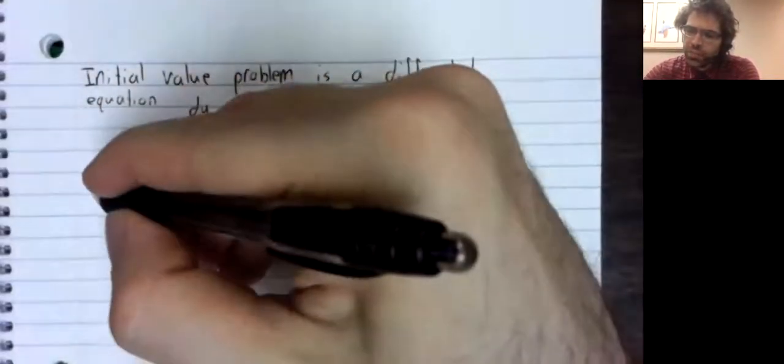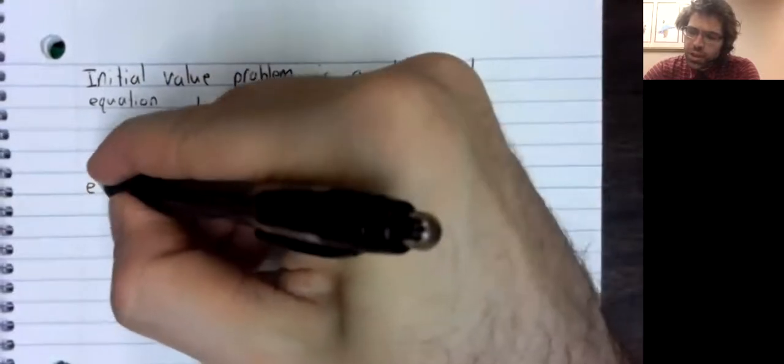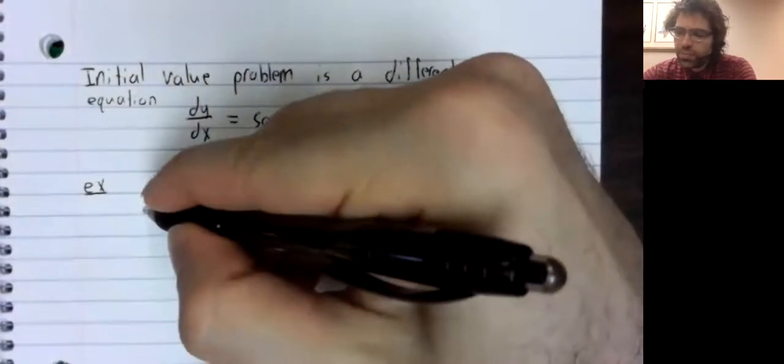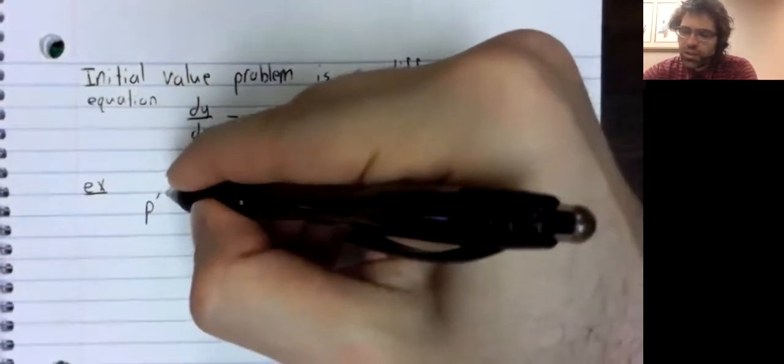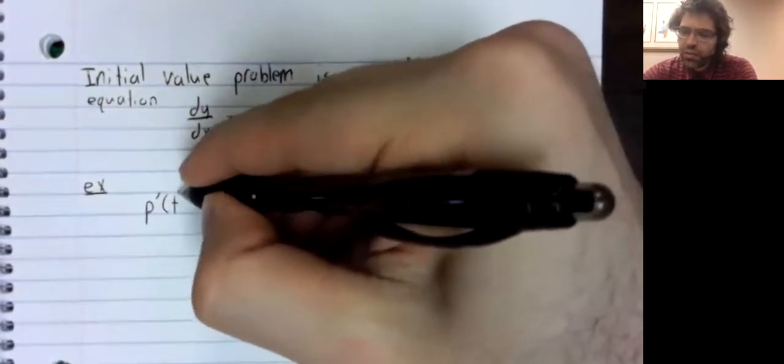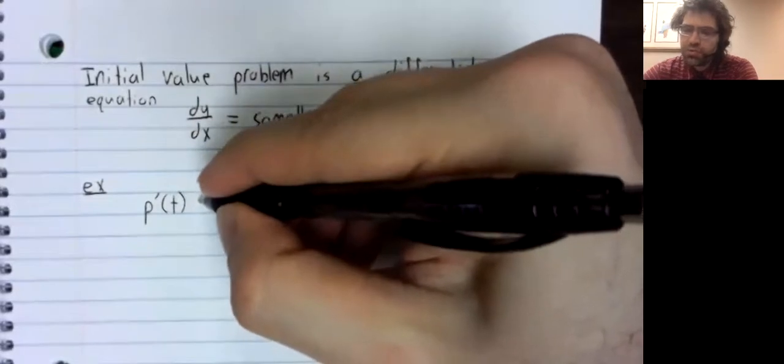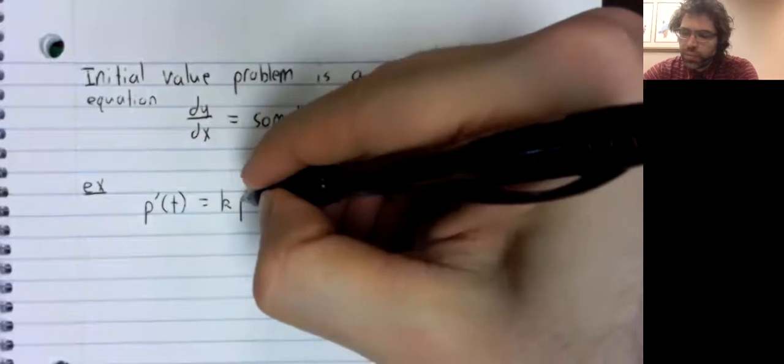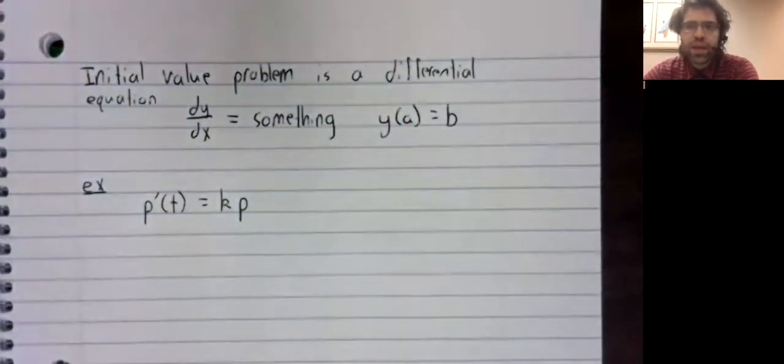And as an example of this, let's come back to p prime over t equals k times p.